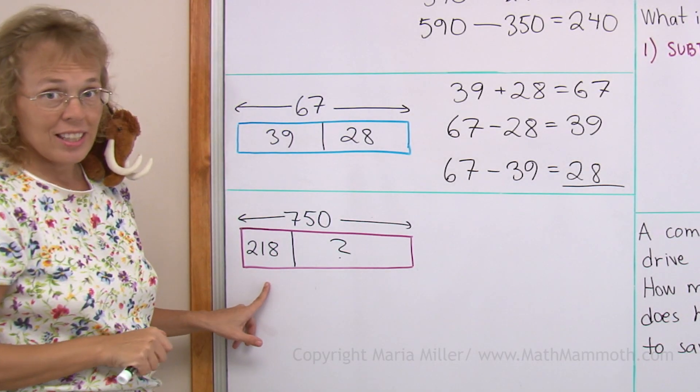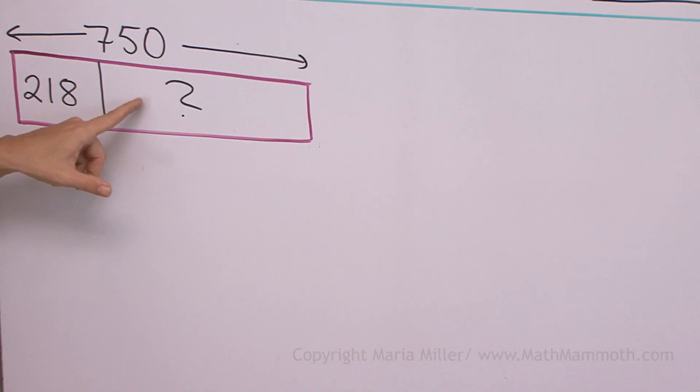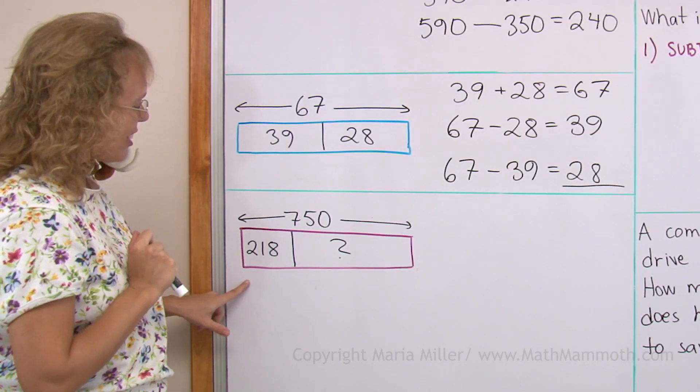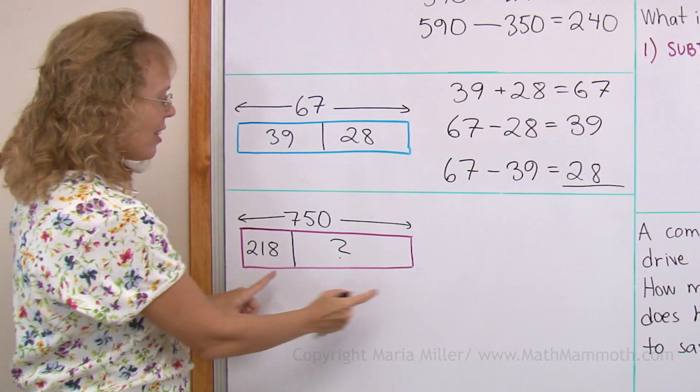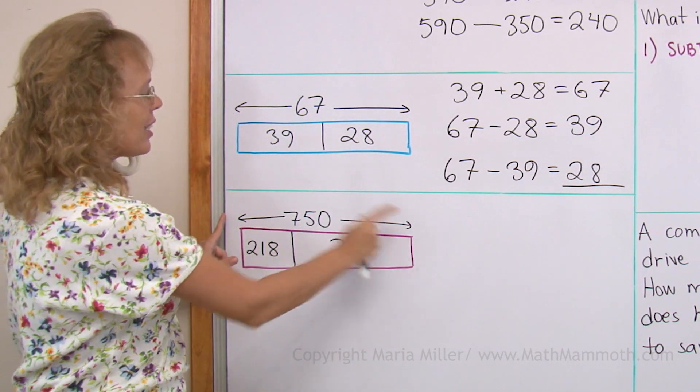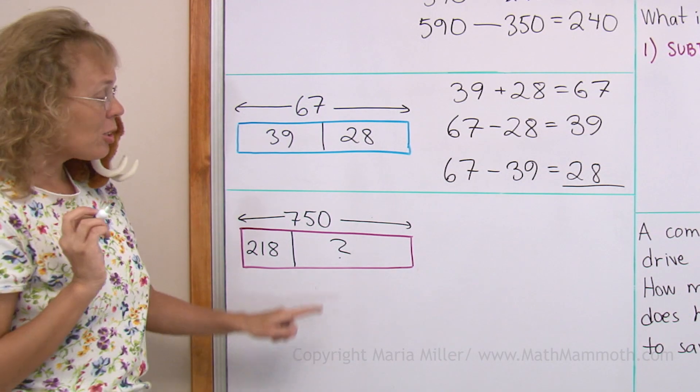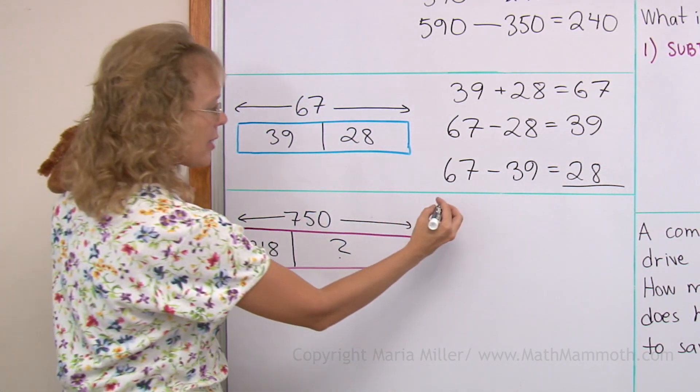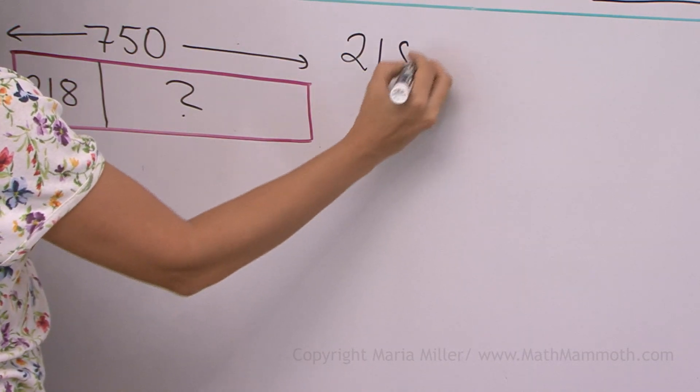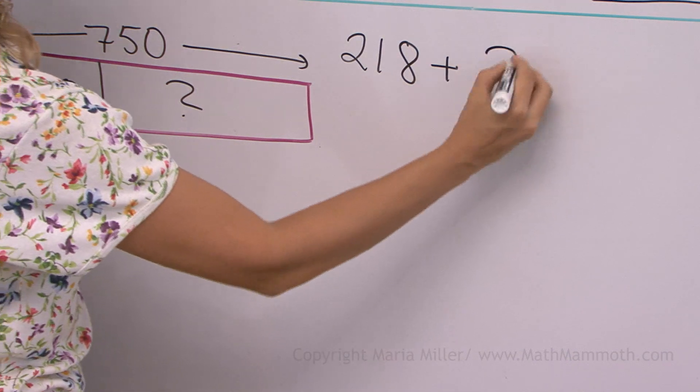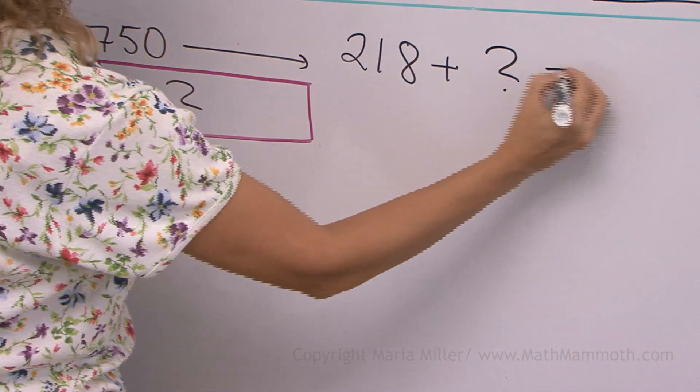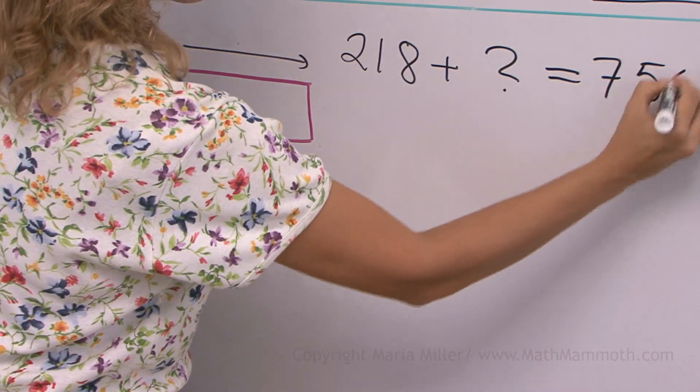Over here in this bar model, I have a question mark, an unknown. This is again a little bit of algebra. 218 is one part, and then there's another part, and the total is 750. So I can write an addition with the unknown like this: 218 plus the other part, which is a question mark, and then the total is 750.